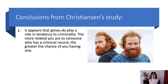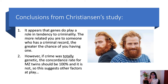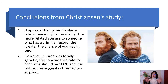The conclusions from the Christiansen study: it appears that genes do play a part in the tendency to criminality, and the more related you are to someone with a criminal record, the greater the chance of you having one too. However, if it were totally based on genetics, you would expect 100% concordance — it's only 52%. What about the other 48% where one twin was a criminal and one wasn't, despite identical genes? This implies there are other factors at play beyond just genetics.